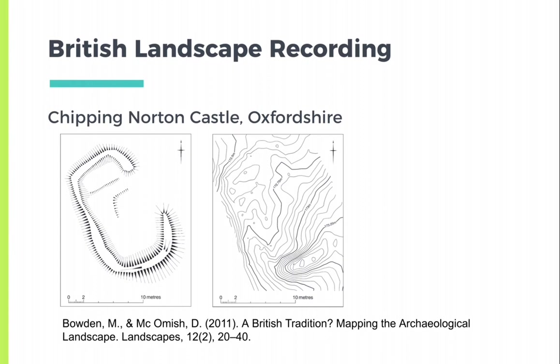As Bowden and McComish note, both were surveyed with a survey-grade GPS, but the contour plan took much longer to generate and is a much more laborious process, unless the measurements are provided remotely by laser scanning or by LIDAR. The British tradition is so strong that Bowden and McComish suggest that earthworks exist in other countries but go undetected because of differing perceptions of space and how to interpret landscapes. They credit the history of the Ordnance Survey as being instrumental in identifying antiquities as features of the landscape, effectively training generations of British people to locate these earthworks.